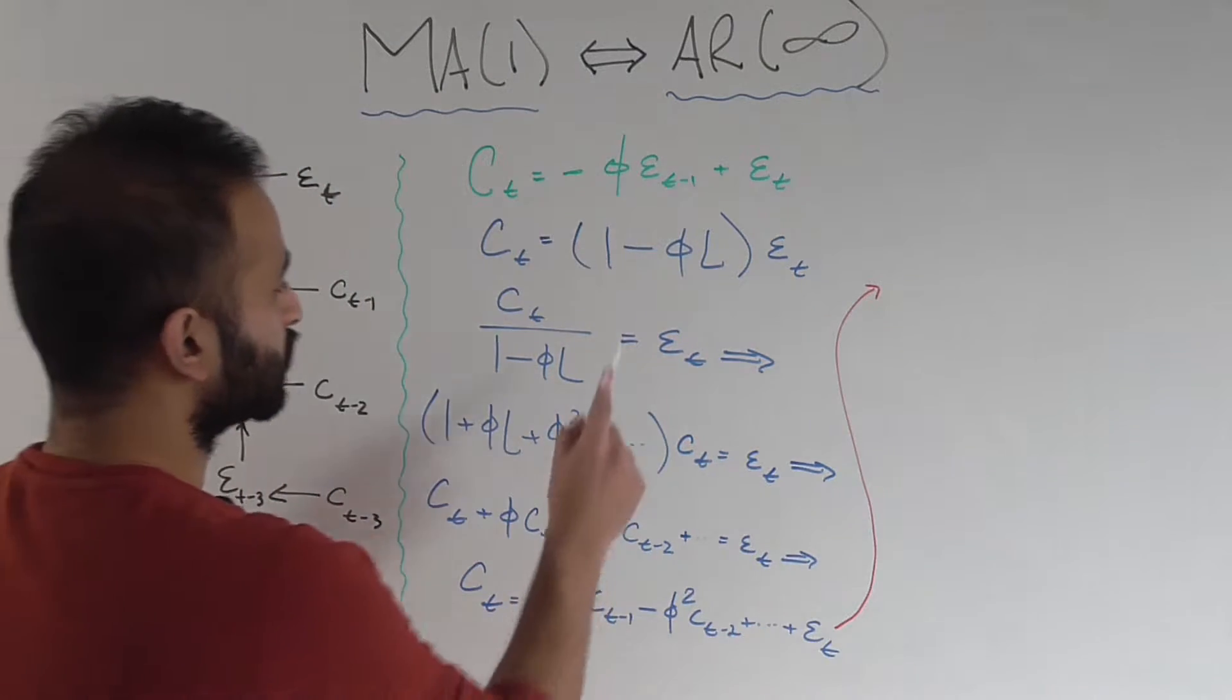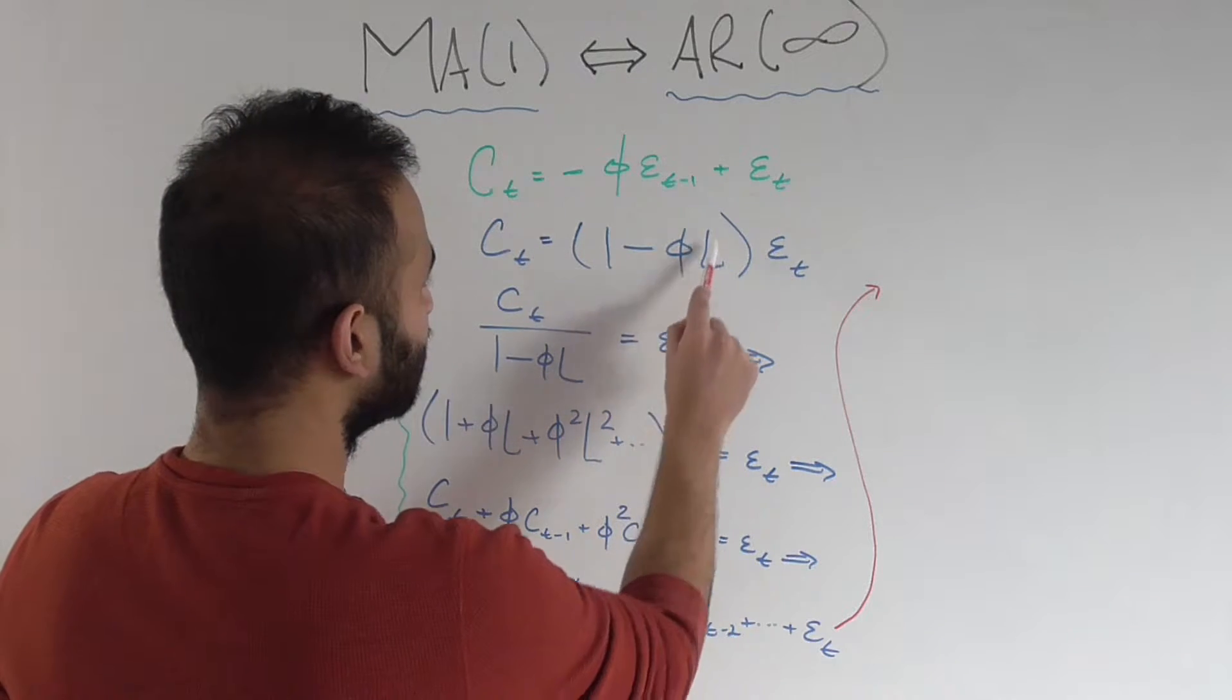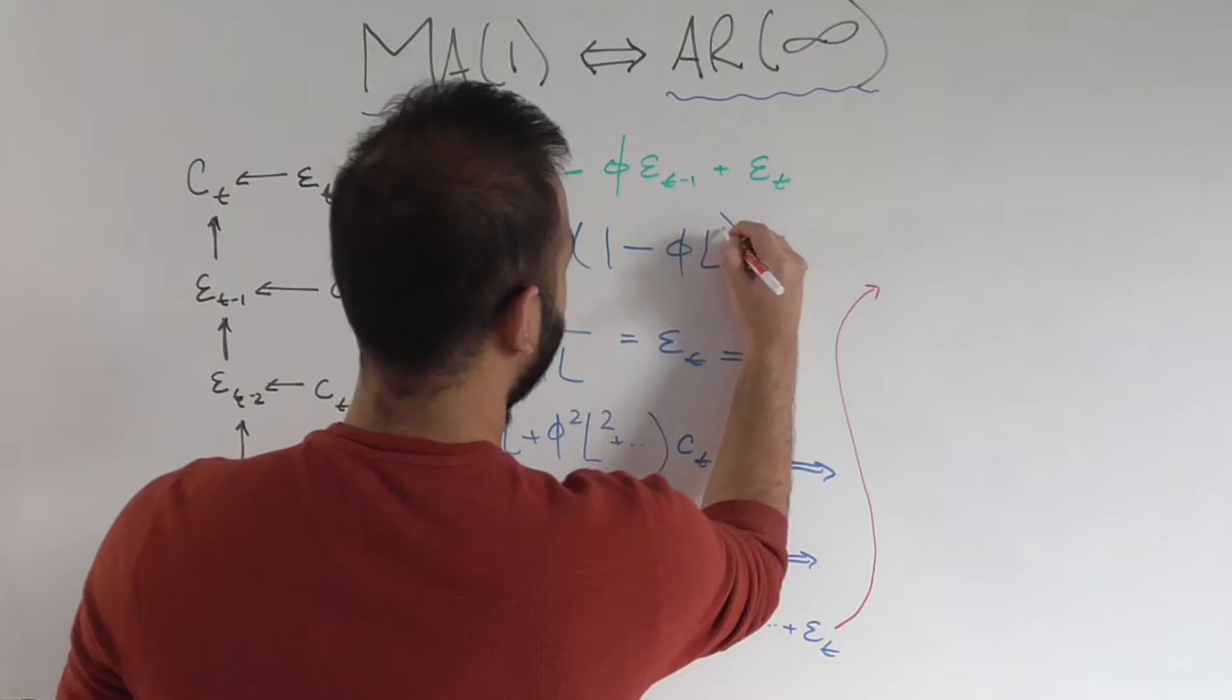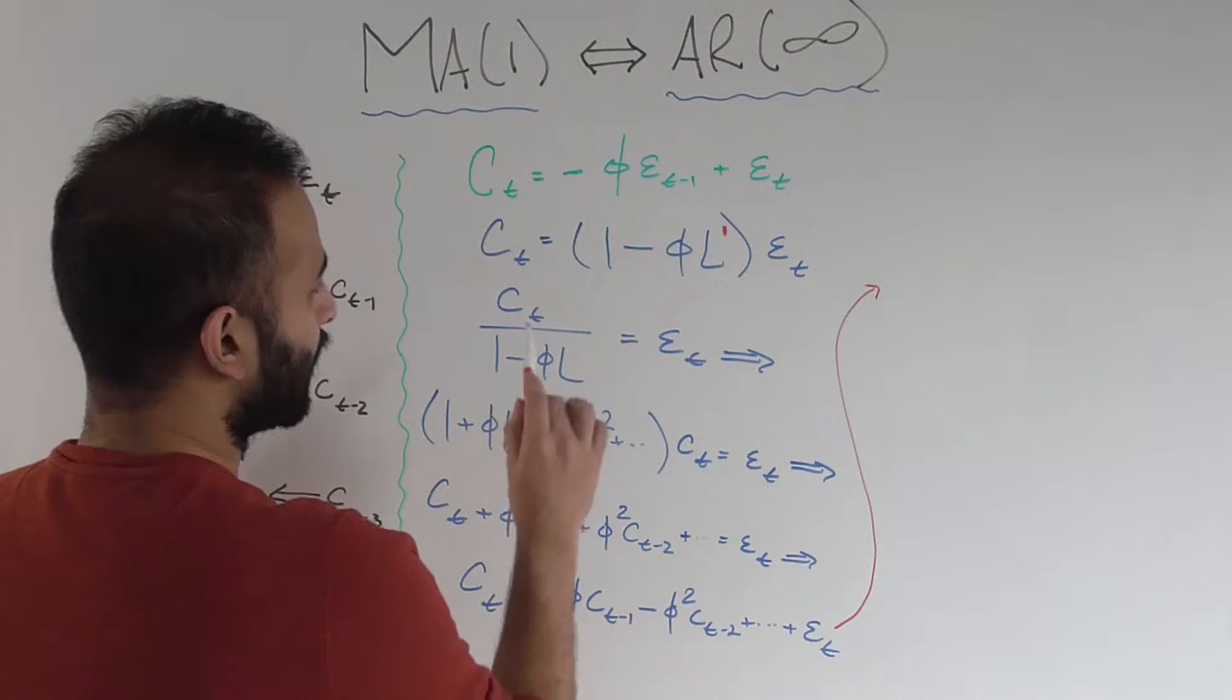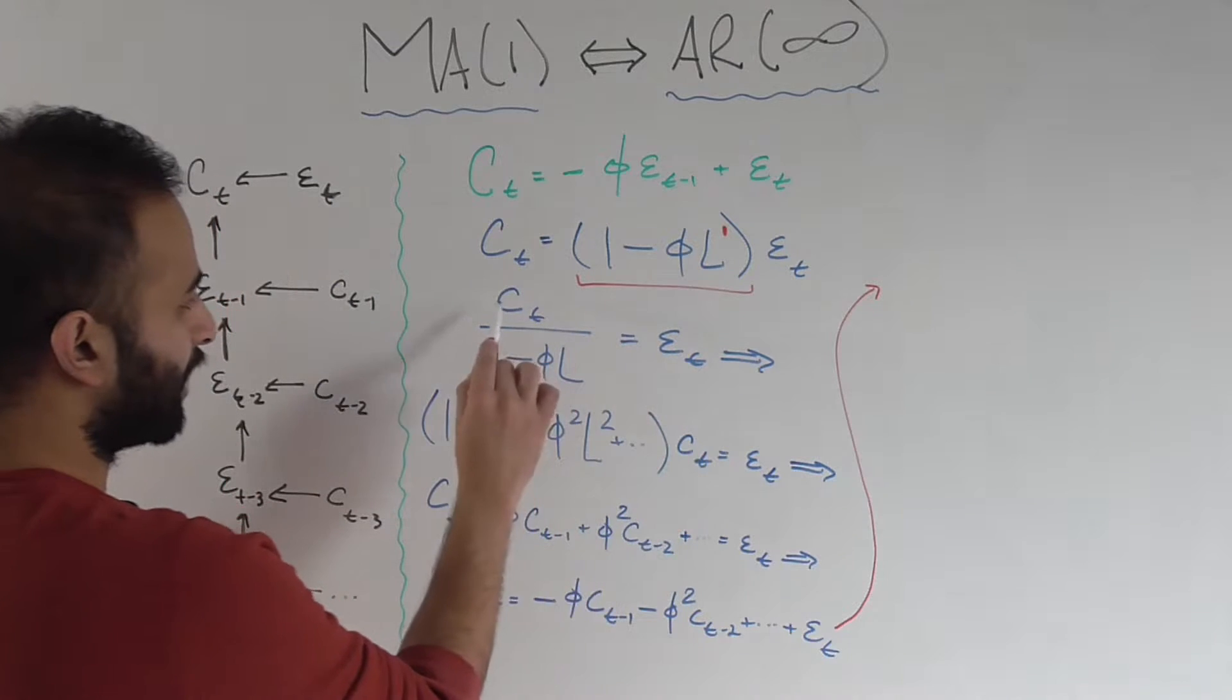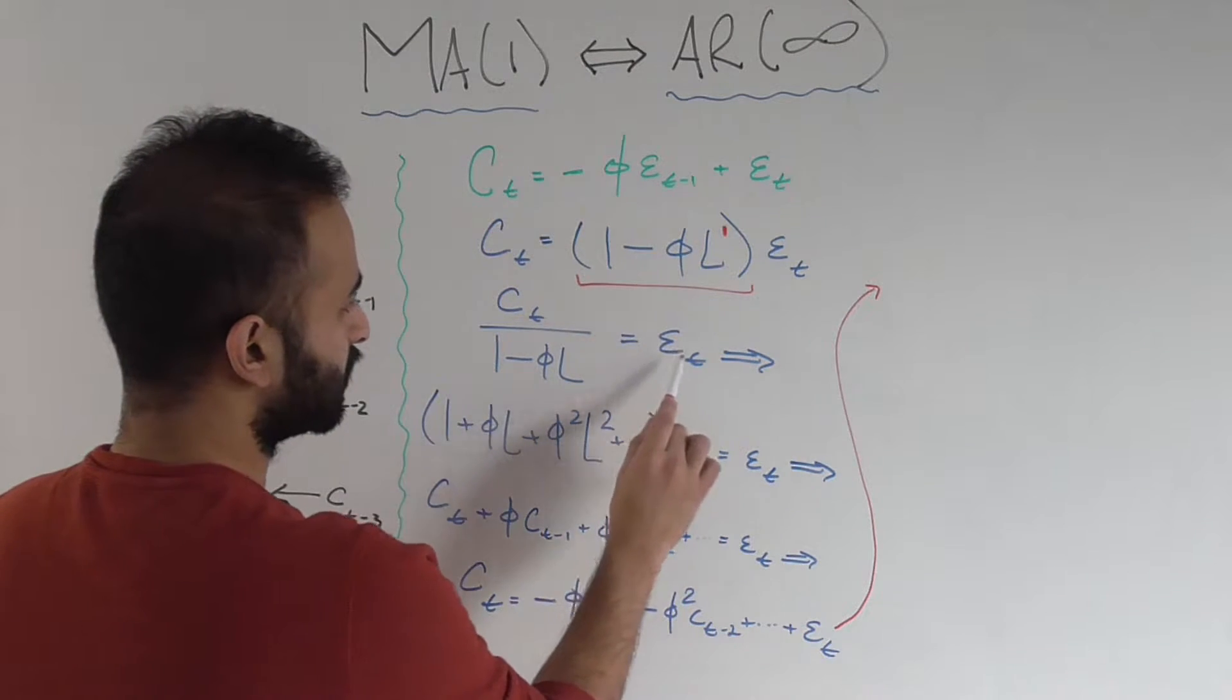So the first thing I'll do is use the lag operator to rewrite this right-hand side of the equation as 1 minus phi lag, and you can think of the one exponent here if you would like, epsilon sub t. Now I can divide both sides by this quantity, which is how I get C sub t over 1 minus this phi L equals epsilon sub t.